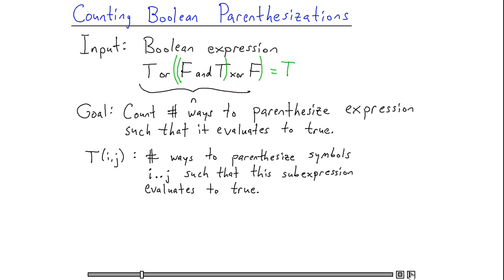Just for an example, if I look at the string of symbols above, then T(2,4) is going to be 0, because there is no way that I can parenthesize this subexpression such that it evaluates to true.